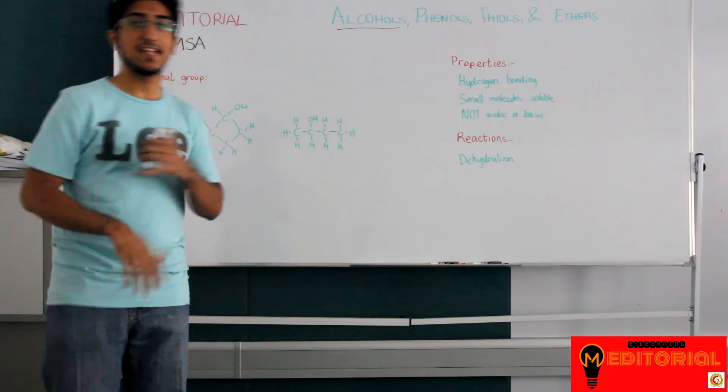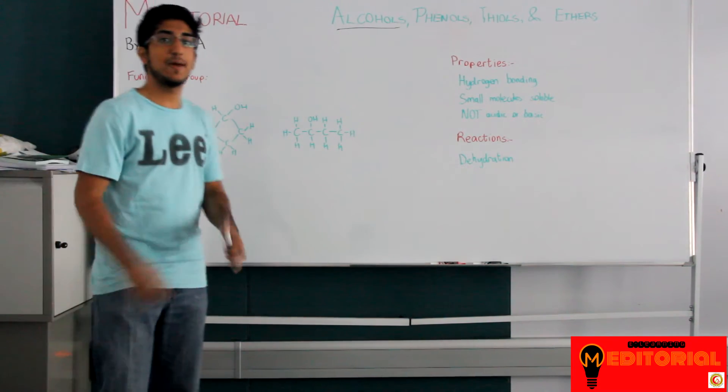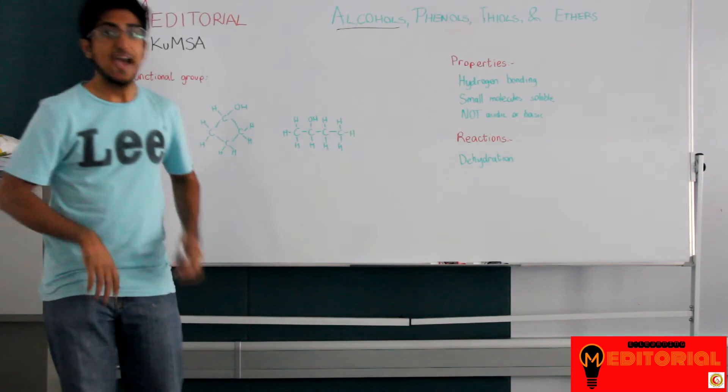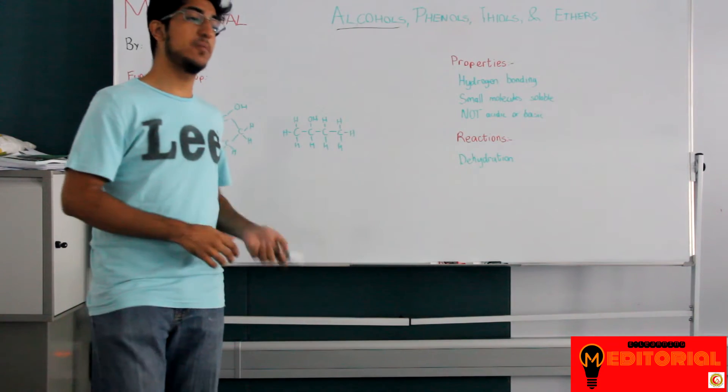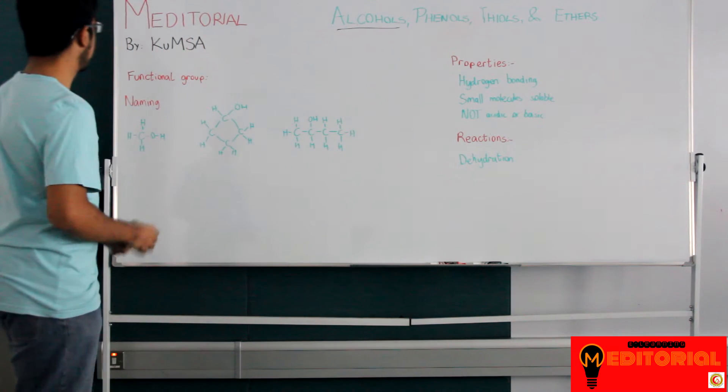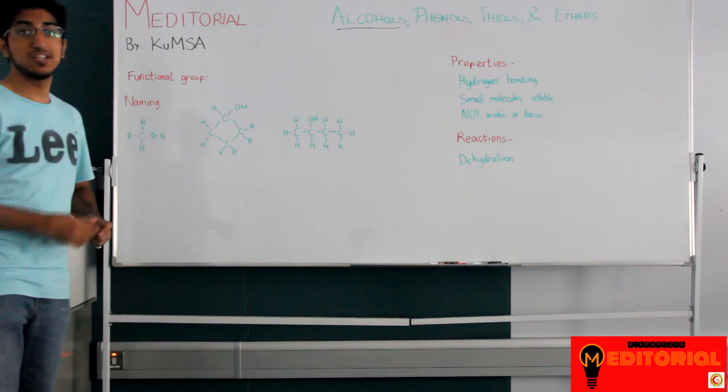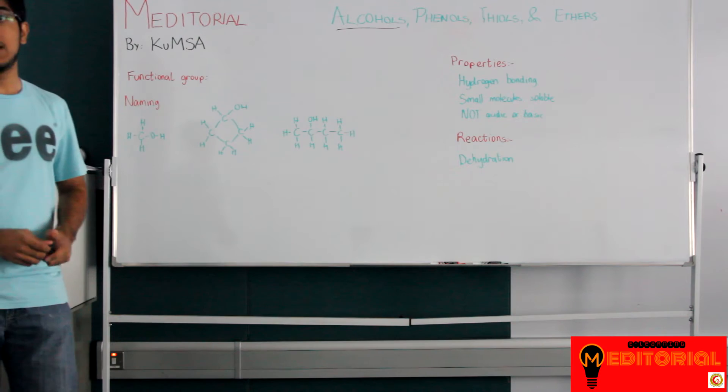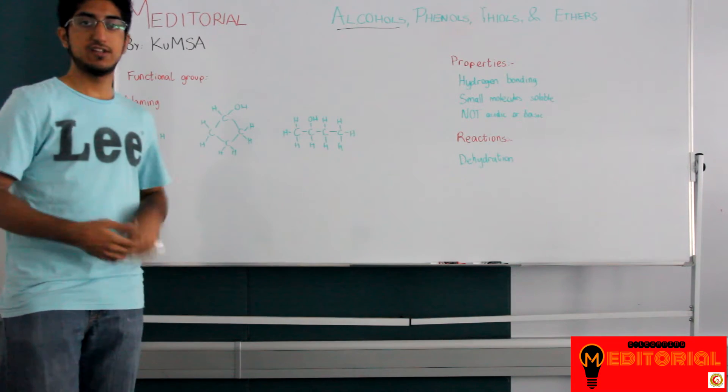We studied alkanes, alkenes, alkynes, and aromatic compounds. None of them had oxygen in them. They were all hydrocarbons, only carbons and hydrogens. Right now we're going to be talking about organic molecules that have other elements in them, such as oxygen and nitrogen.